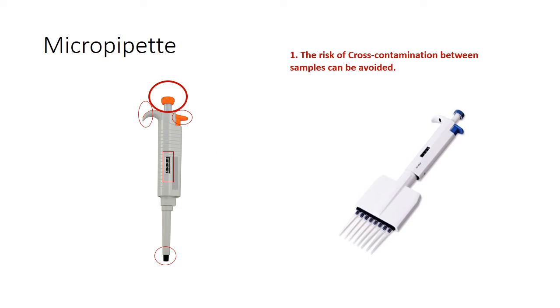The risk of cross contamination between samples can be avoided because we use disposable tips. Better accuracy of measurement. It is much more accurate than the glass pipettes. Eliminate the necessity of washing between samples as we are using disposable tips. There is no need to wash, but calibration of a pipette should be done at fixed intervals.